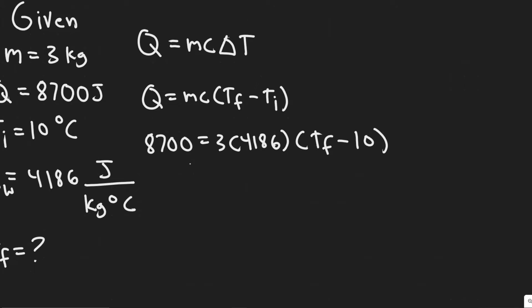So if you go ahead and do this, you would divide both sides by this, 4,186 times 3, 4,186. So we have that when you go ahead and do this. So 8,700 divided by 3 times 4,186.